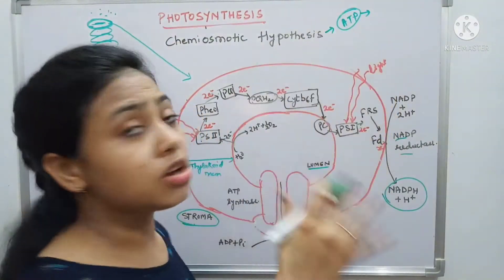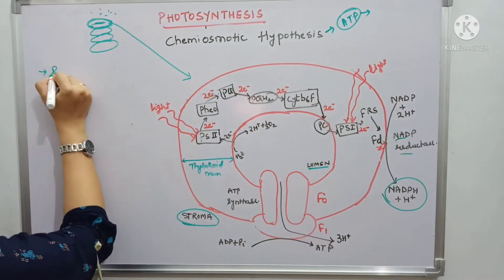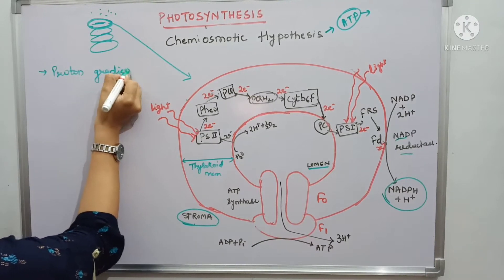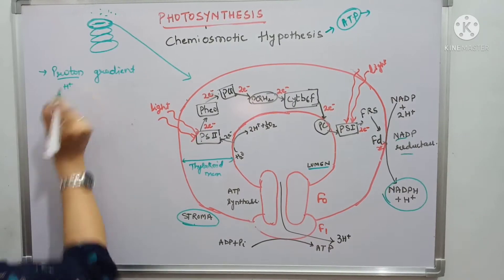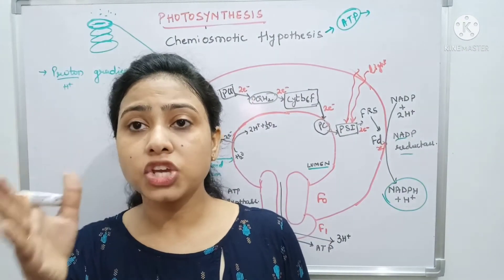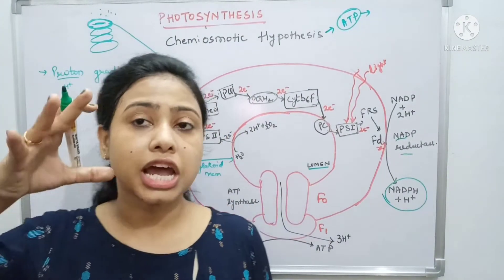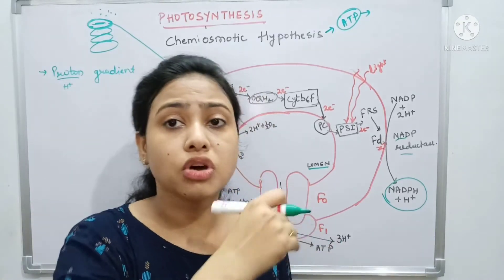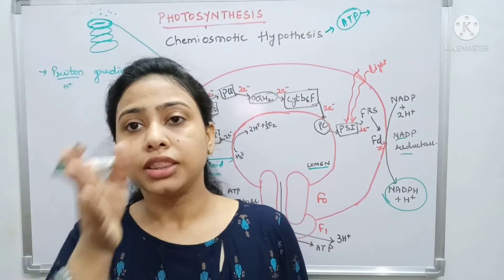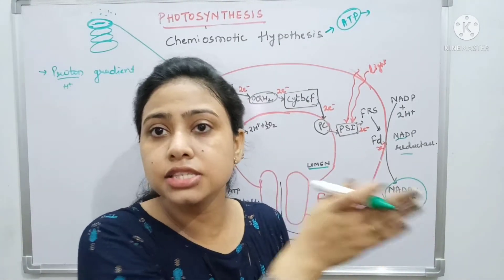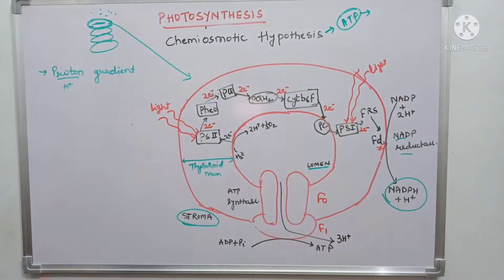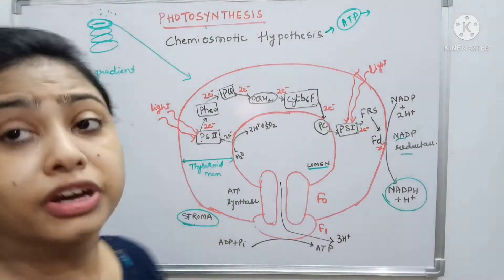ATP gets formed because of the formation of a proton gradient. Proton means hydrogen ion, and gradient means a sequential distribution — hydrogen ion concentration is gradually getting reduced or increased in one direction. For example, first a higher amount then lesser and lesser, or first a low amount then higher and higher. This is called the gradient.